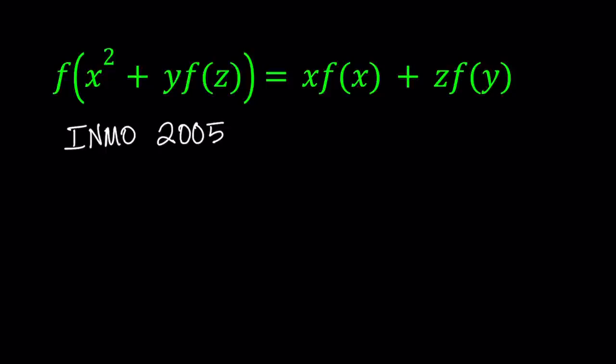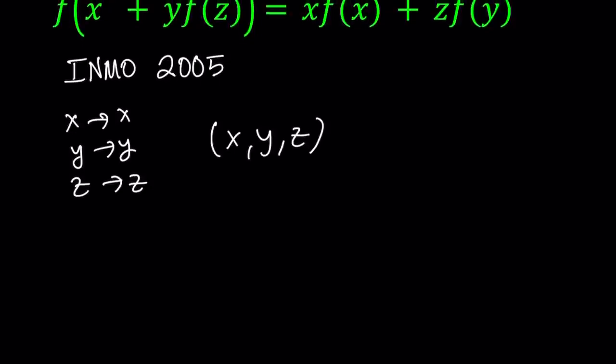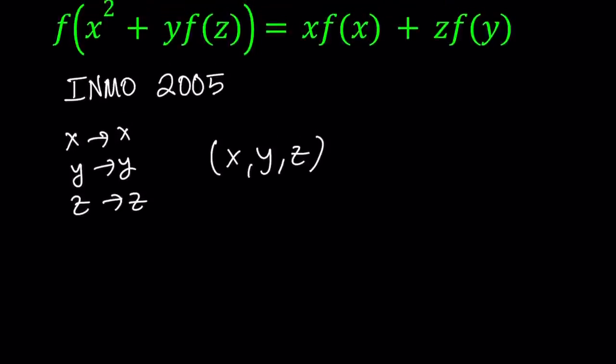In order to explain which notation I use, I'm going to be replacing — let's say I replace x with x, y with y, and z with z. I'm going to represent it with an ordered triple, written as (x, y, z). This just means replace x with x, replace y with y, and replace z with z. So let's go ahead and start by using (0, 0, 0).